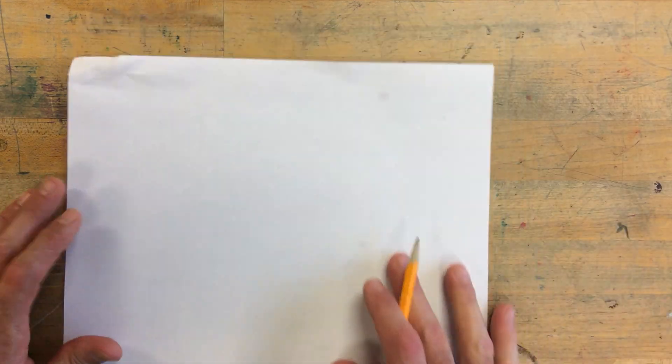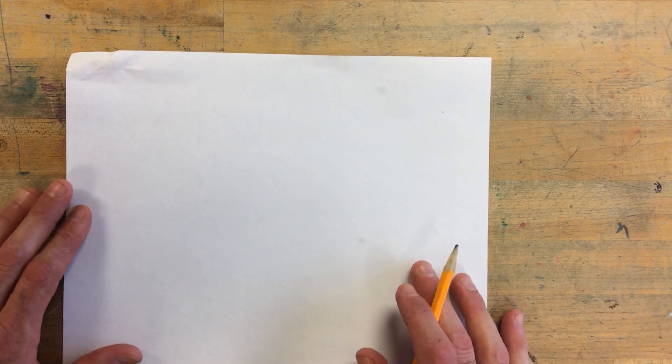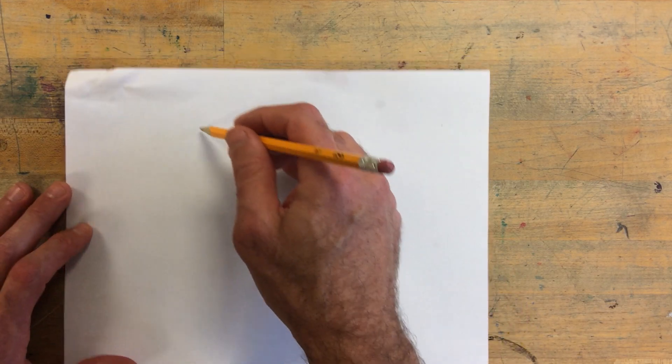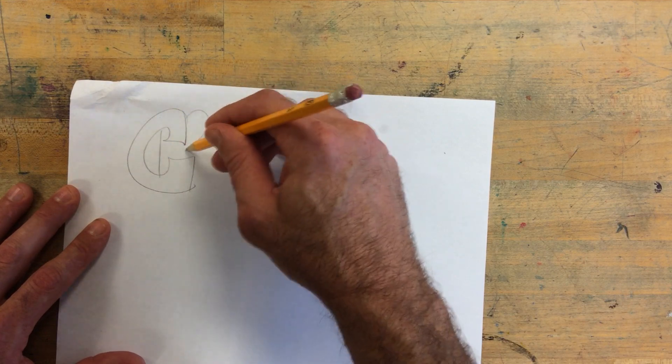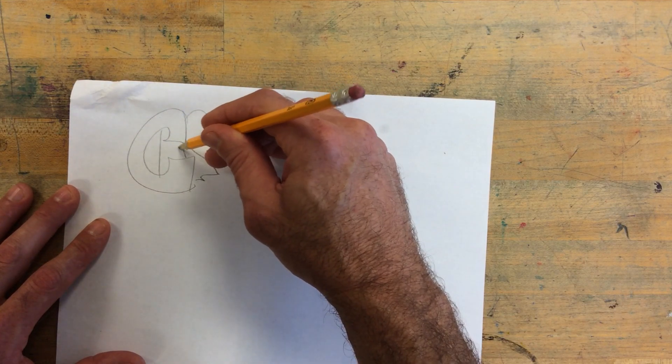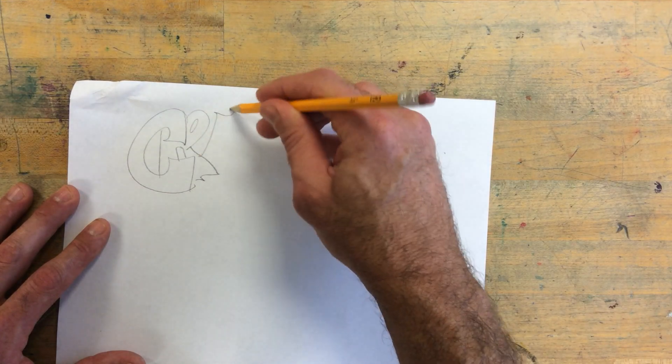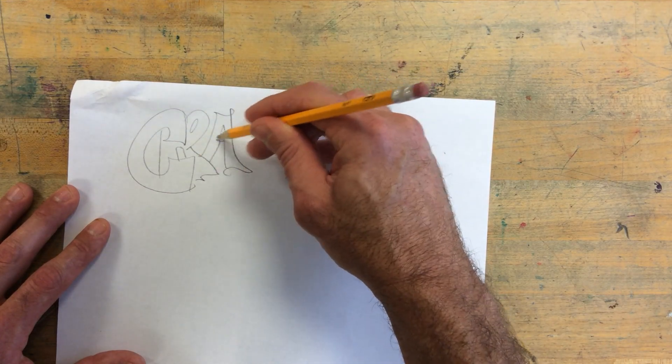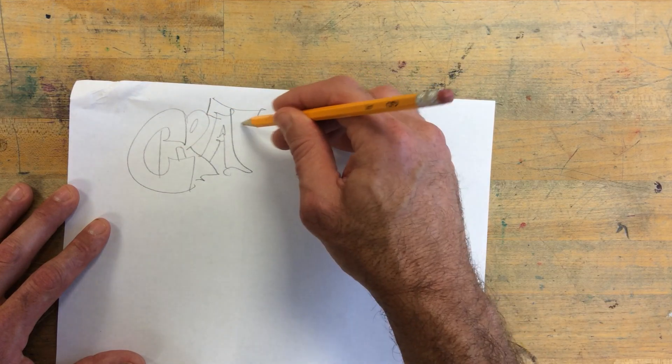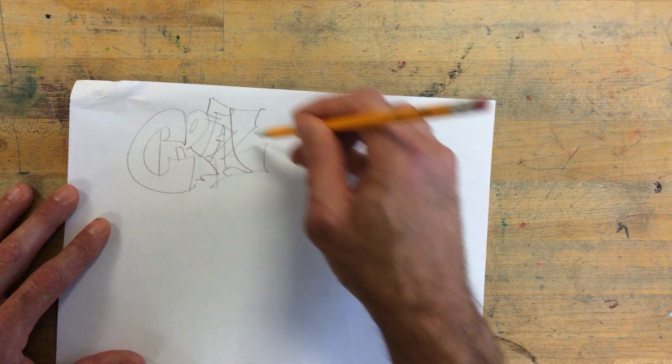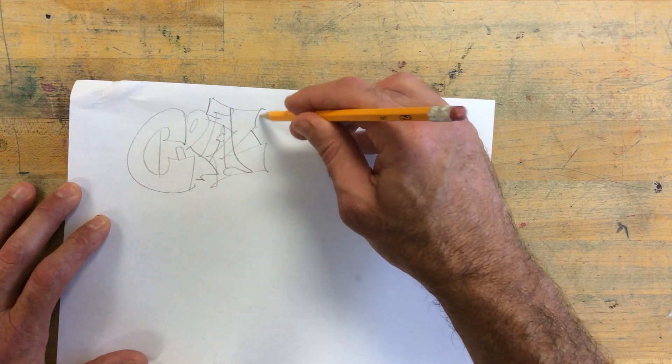So one thing that's cool about graffiti is that the letters do some things that just make it look a little bit more interesting to look at. One of which is often that the letters are going to overlap, so that it looks a little bit crazy when you write it.